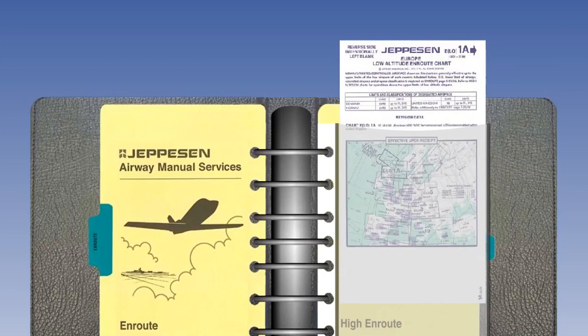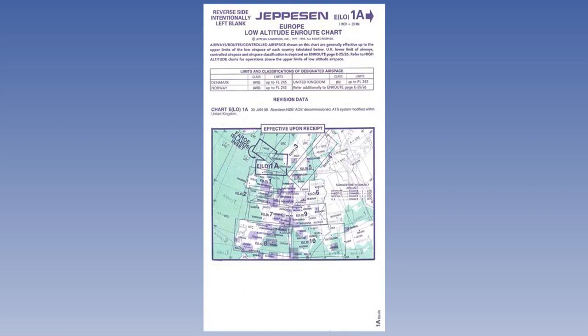Open the manual to the first envelope in the low-level Enroute section. Starting from the top of the chart, we can see that this is entitled Europe Low Altitude Enroute Chart. This is confirmed by the chart number found in the top right-hand corner, where the letter E indicates it is a European chart, LO in brackets shows it is a low-level chart, and the 1A is its number in the series.